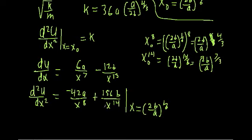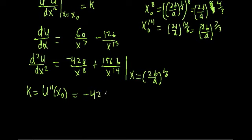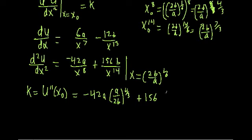Now let's plug these in. Since we're dividing by these terms, we flip them. So K — which equals the second derivative of U at x₀ — equals negative 42A times (A/2B)^(4/3), plus 156B times (A/2B)^(7/3).